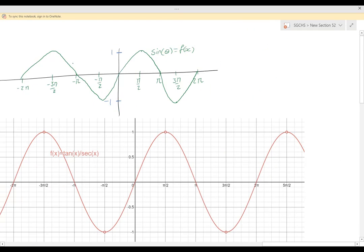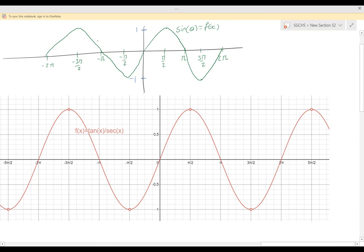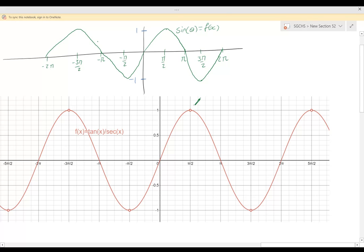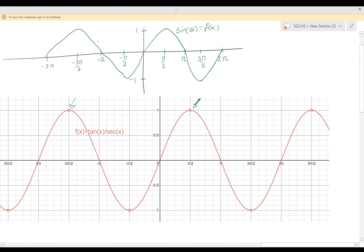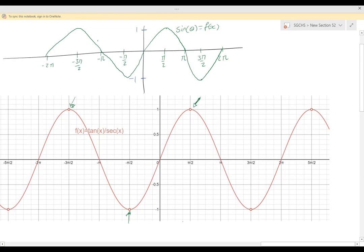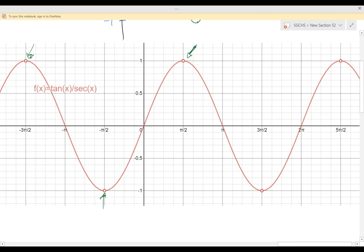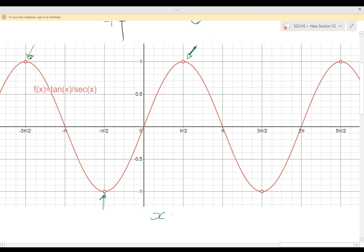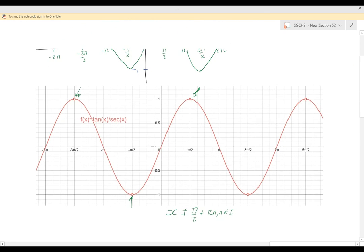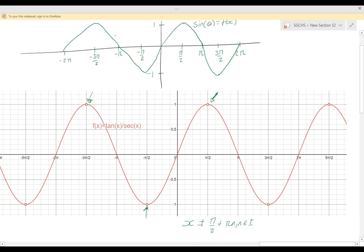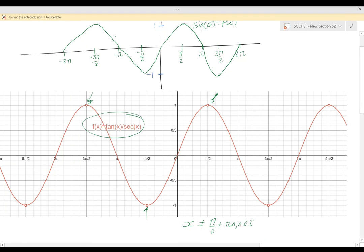Now recognize if we graph this in our graphing calculator we would not be shown these holes. Recognize these holes are in the general solution x cannot equal π/2 plus πn where n is any integer. So if you graph these two—if you graph this function and you graph sin θ—